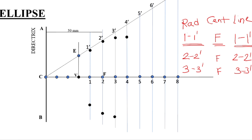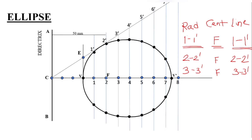Continue this procedure for points 4, 5, 6, and 7, getting two intersection points above and below each time. When you reach point 8, taking distance 8 to 8-dash as radius from point F cuts an arc exactly on the axis line itself — this point is the second vertex V2. Once you have all these intermediate points, draw a smooth curve passing through all of them — this smooth curve is the ellipse.